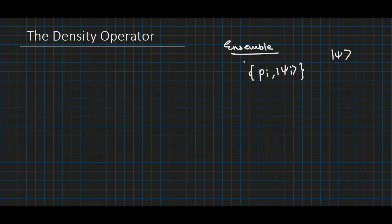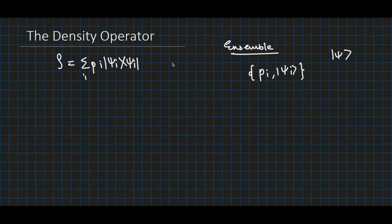We define the density operator for the system as ρ = Σ_i P_i |ψ_i⟩⟨ψ_i|, which is the outer product of state |ψ_i⟩. The density operator is also known as the density matrix.